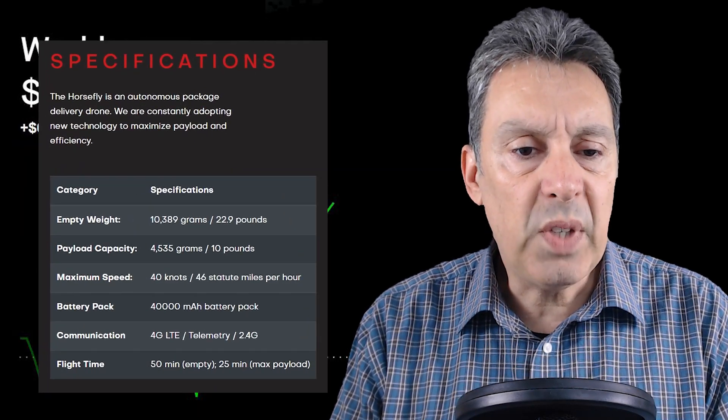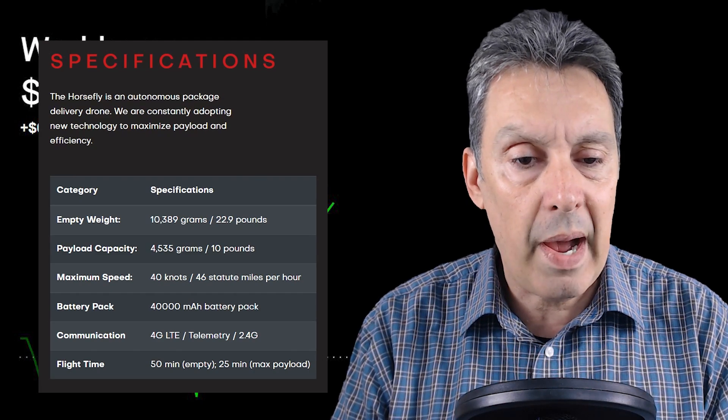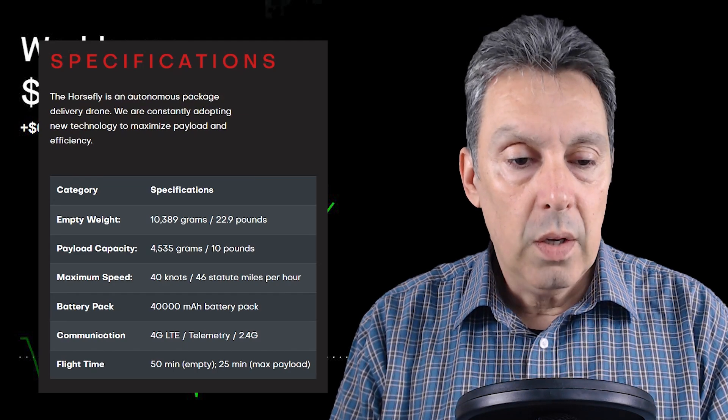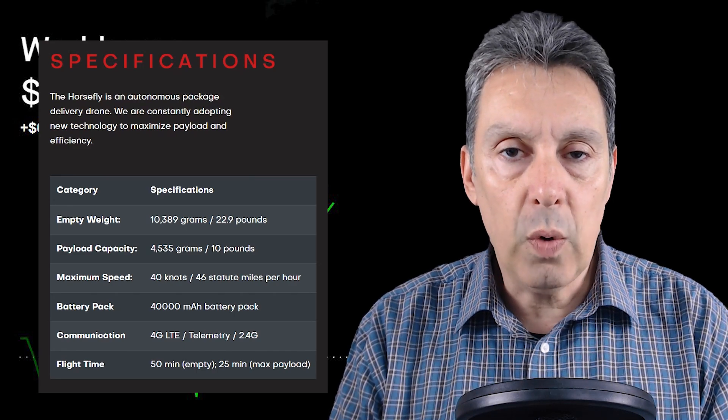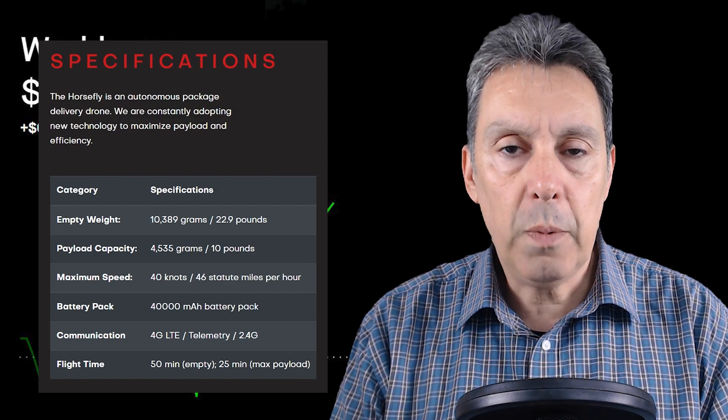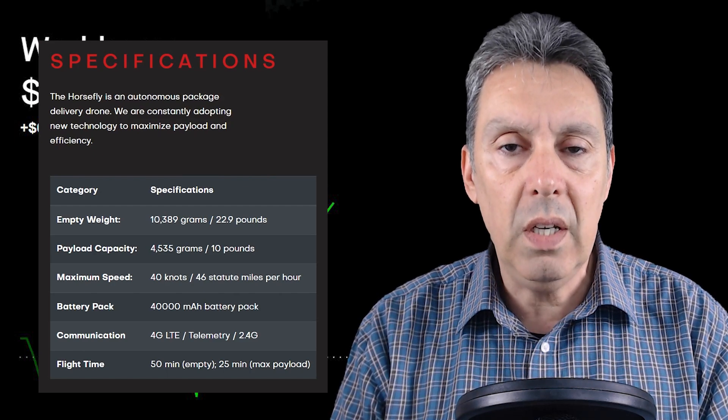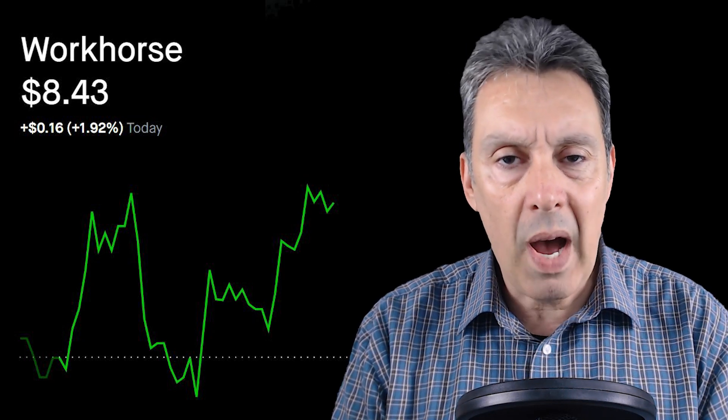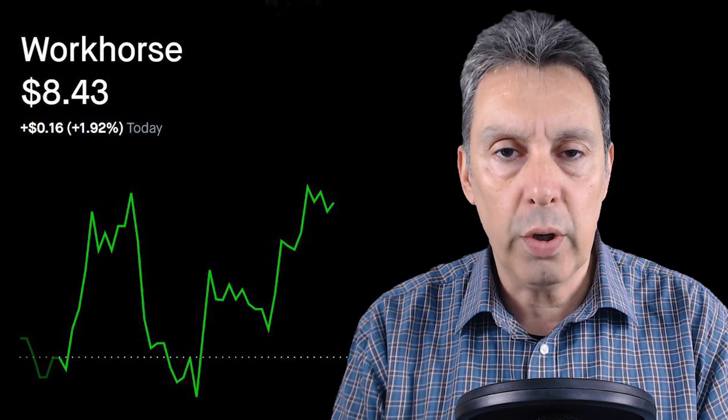So if you look at the specifications real quickly, it's about 23 pounds. The payload capacity is about 10 pounds and its maximum speed is about 40 knots, which is just under 50 miles an hour. So you can see the flight time is 25 minutes with the payload included. So at 40 or 50 miles an hour in 25 minutes, it's pretty easy to deliver a package 10 or 15 miles away. And I think most of them will be significantly closer than that. This is more than capable of being the last mile of the last mile delivery service. And that is what I think they're looking for.